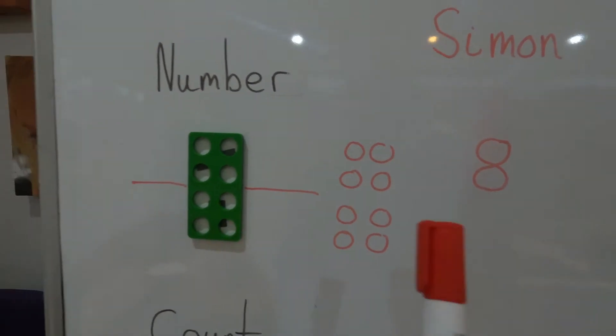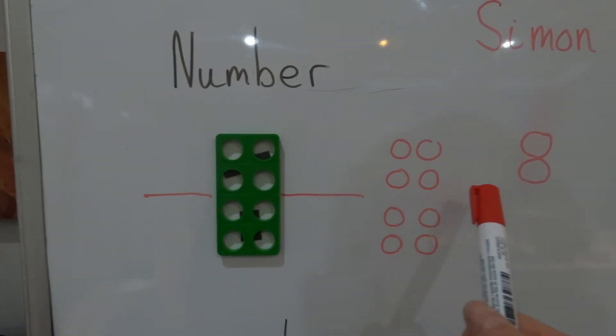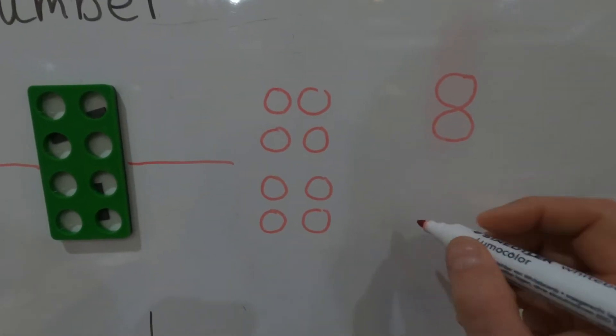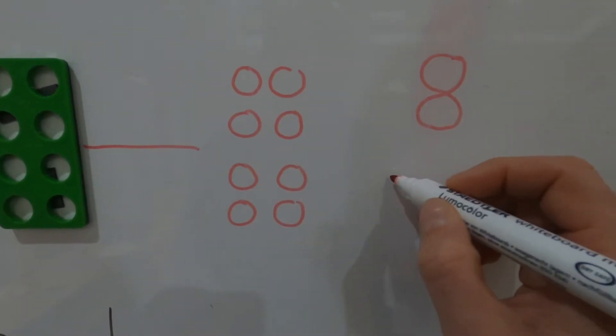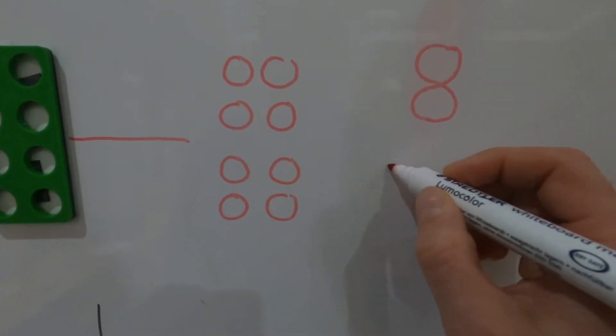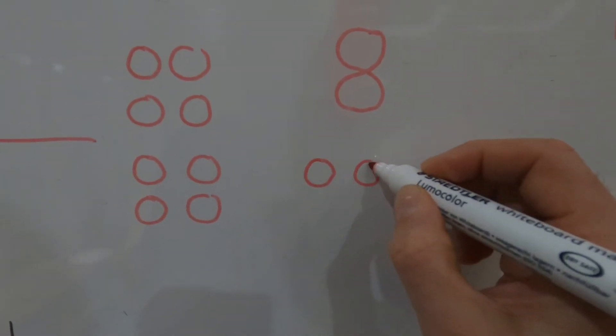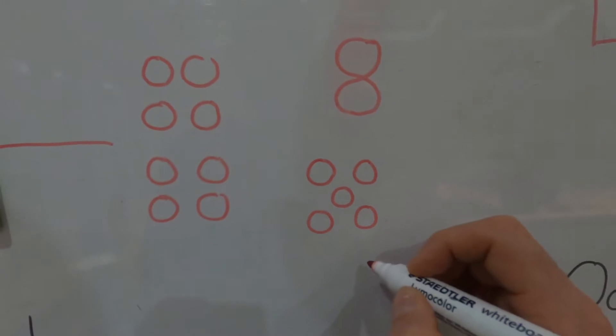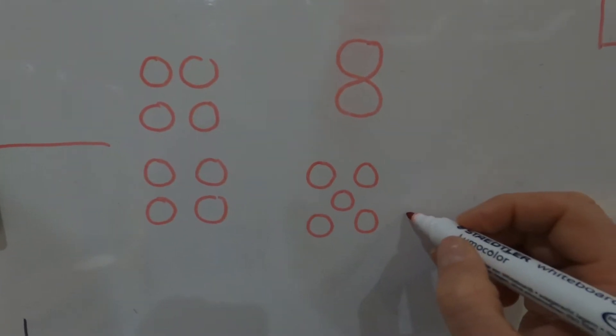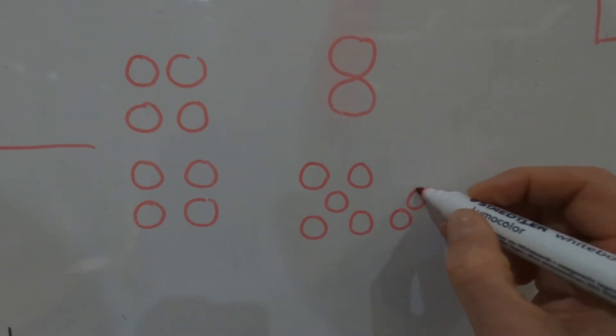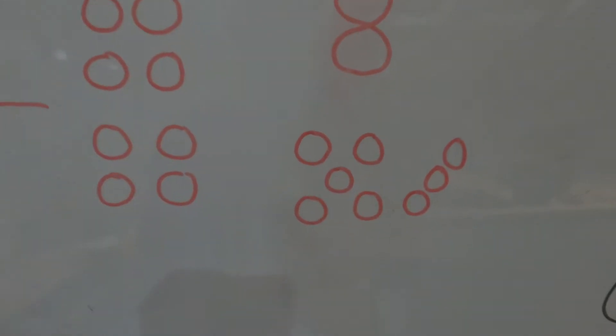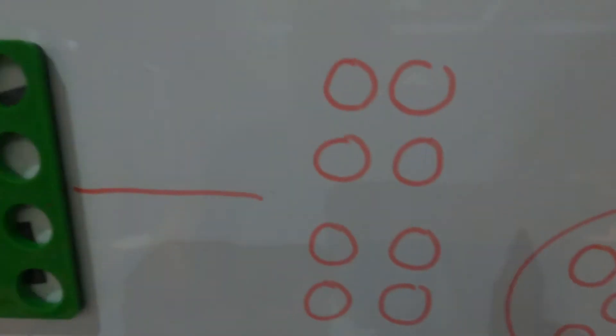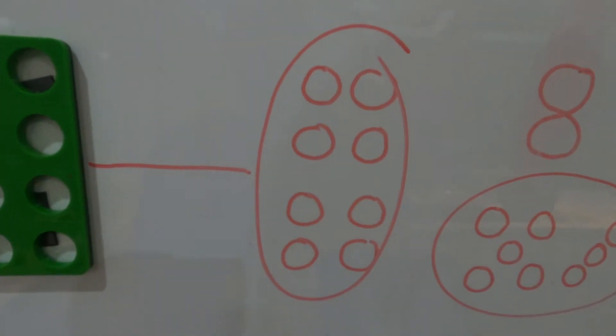Another way to draw eight: we're going to do five first, one, two, three, four, five, then we need three more, six, seven, eight. So that's eight and that is eight.